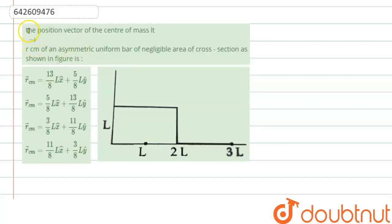Hello everyone. Let's start the question. The question says that the position vector of center of mass of an asymmetric uniform bar of negligible area of cross section as shown in the figure. So we have to find out the center of mass of this arrangement.